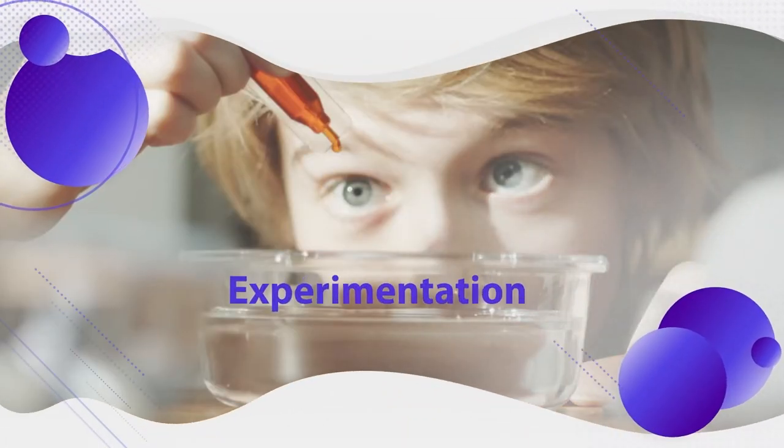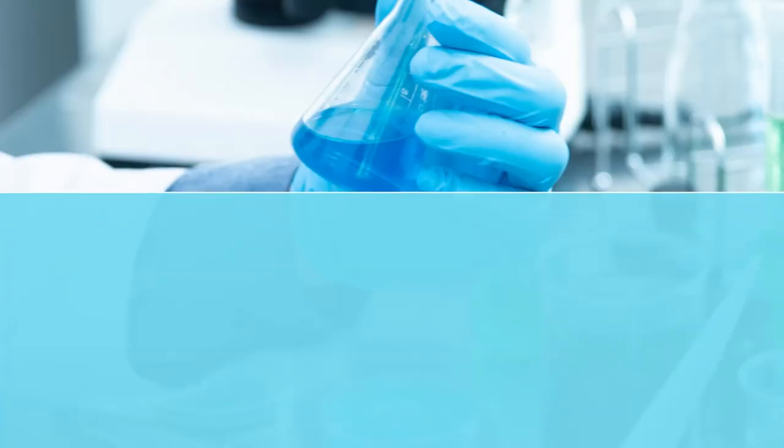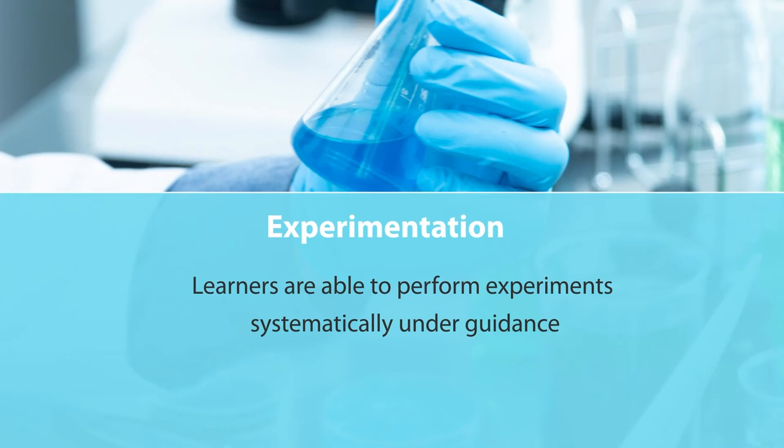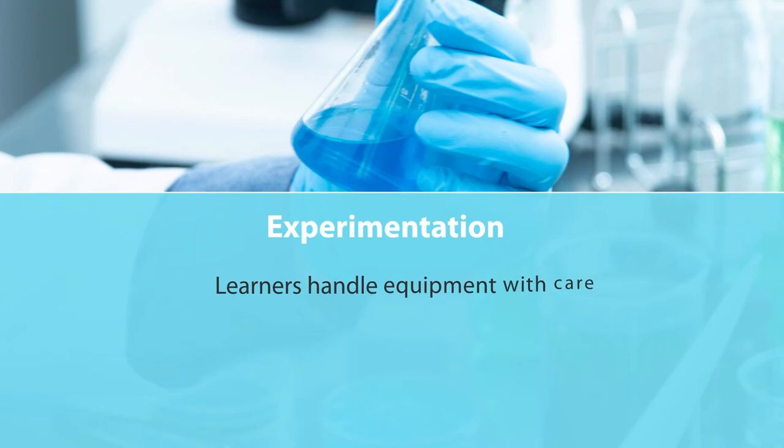Similarly, experimentation — in the lab, you do different types of experiments and ask students to do them as well. But what is the objective in experimentation? Whether the objective is to develop experimental skill, observation skill, precision skill, handling skill, or to get the desired result from the experiment. For experimentation, your assessment indicators should be: whether learners are able to perform the experiment systematically under your guidance, whether they are following the correct procedure, and whether they have learned how to handle equipment with care.